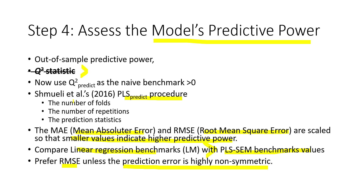Sample size consideration is important in step 4, which assesses the model's predictive power or out-of-sample predictive power — the later generalization of results. Previously, the Q-square statistic was used; a Q-square value greater than 0 indicates the model has enough predictive power. But recently, the PLS Predict procedure is recommended as a better approach. The Q-square predict is still used as a naive benchmark. The PLS Predict procedure has three considerations: the number of folds (partitions of the sample).